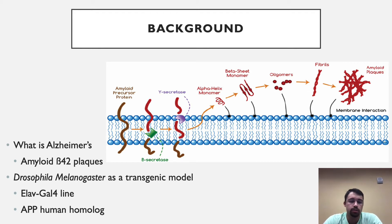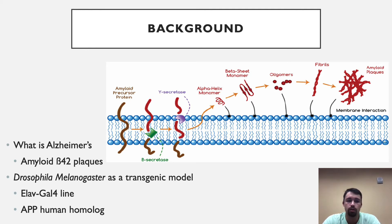When looking at Drosophila melanogaster as our transgenic model, we need to understand that there are two lines that we will be testing in our experimentation. One is the ELOV-GAL4 line, and the other line is the APP human homolog line that I will be discussing in the next slide.